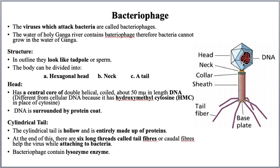Bacteriophage looks like a tadpole. It has three parts: head, a very short neck connecting head and tail, and a tail. The head is hexagonal — it has six angles, so it is called a hexagonal head, similar to a benzene ring in chemistry.